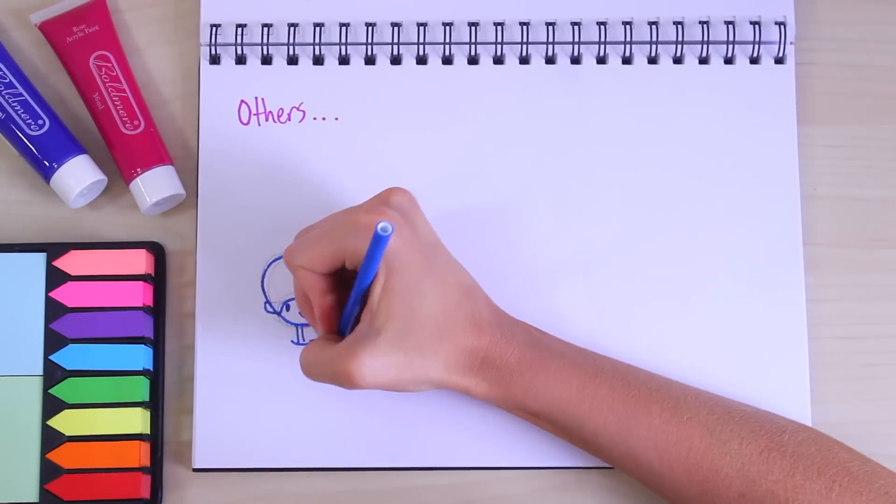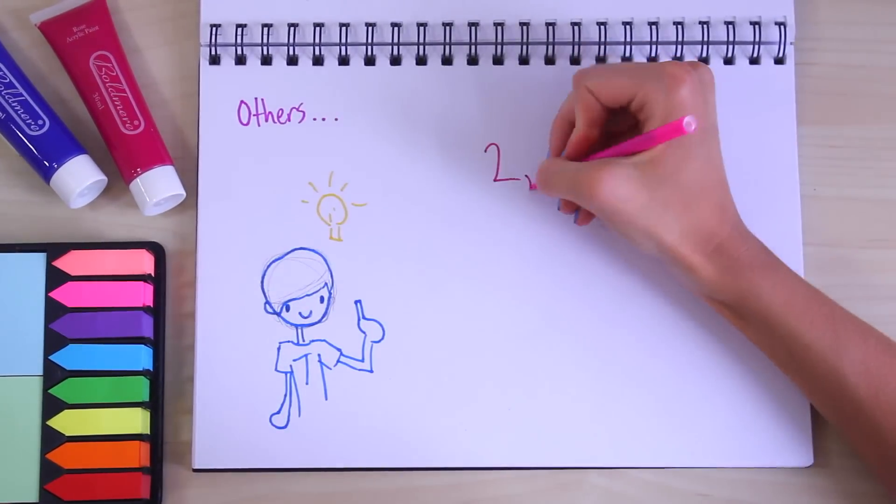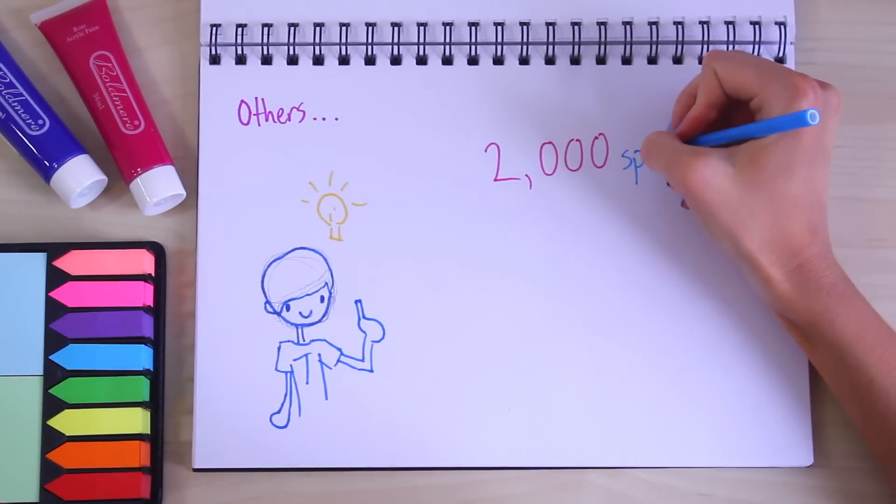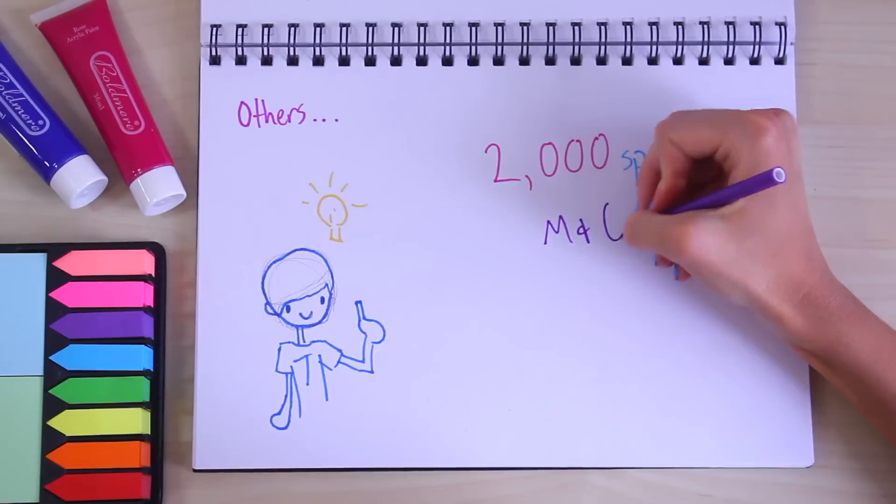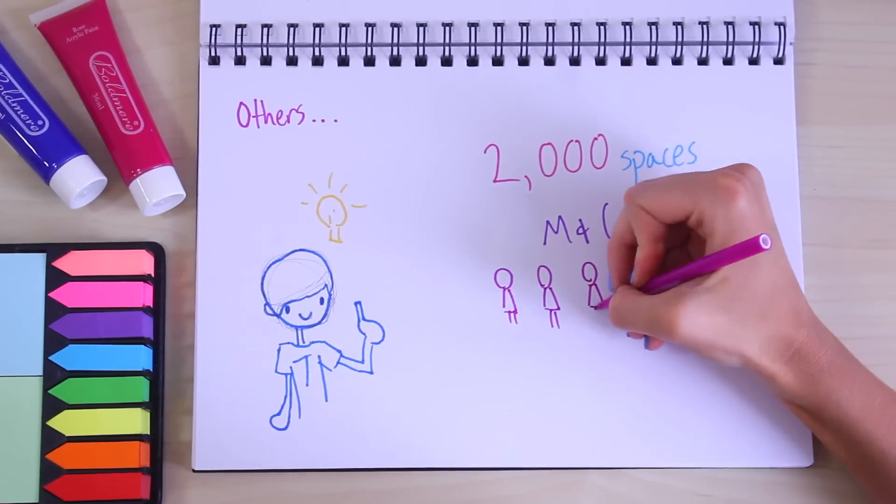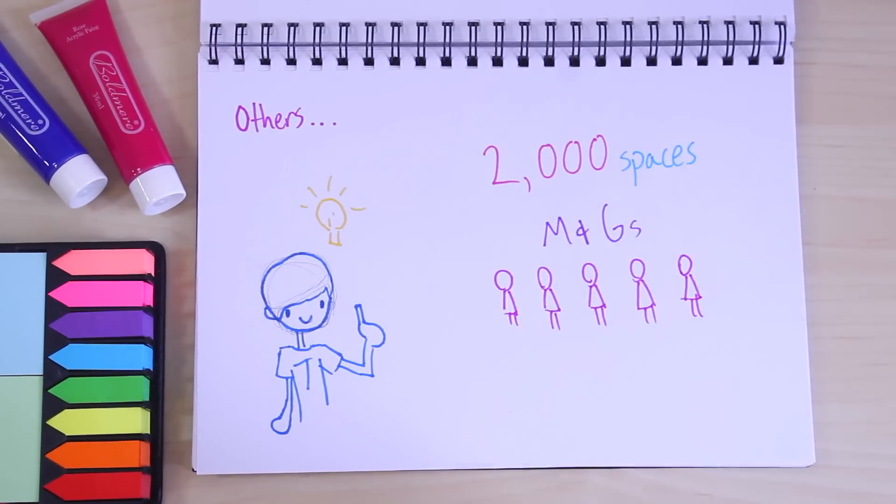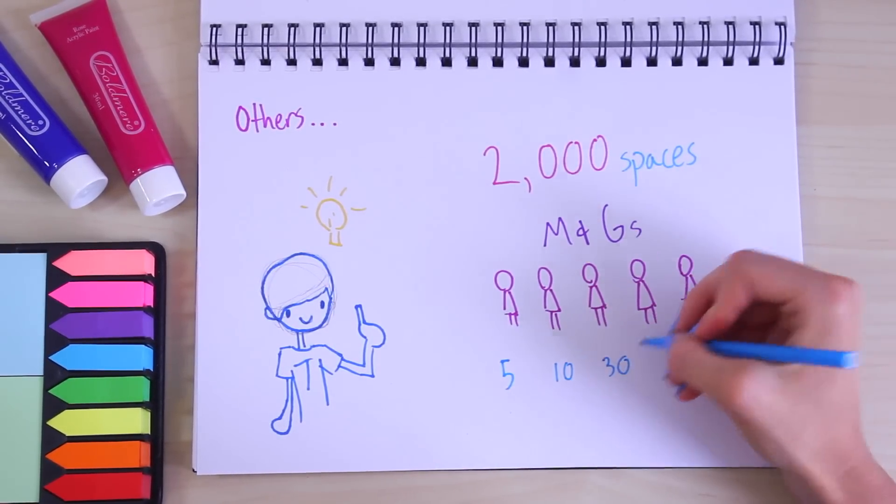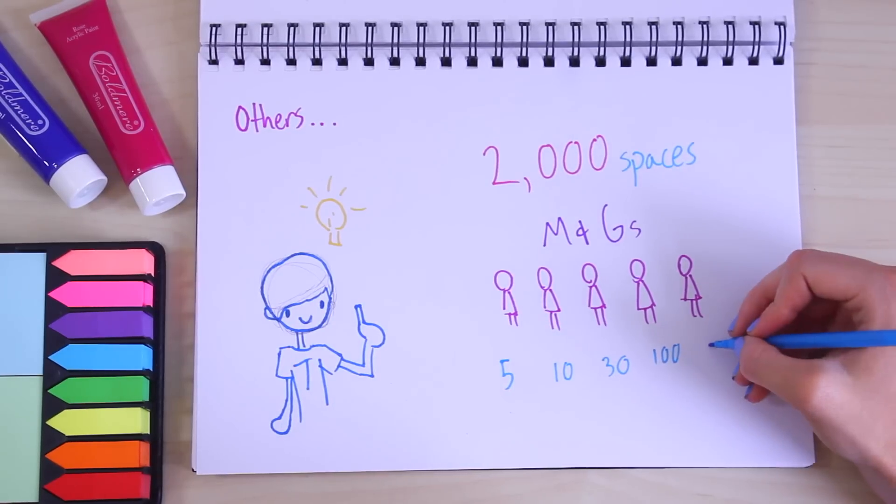So you'd be falling into this others category and there's still hope here because Tom had an idea. He went over his list and he found out that there were 2,000 spaces of meet and greets left over among the YouTubers. So these are people who didn't quite fill up their meet and greets through the ballot system. Some had 5 spaces, 10, 30, 100 and some people just had one.